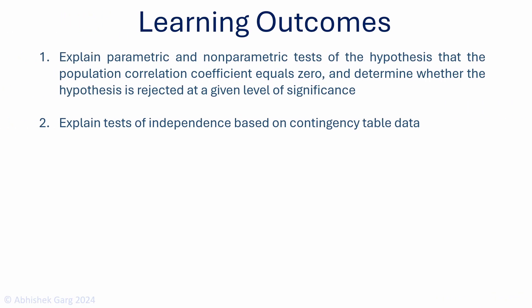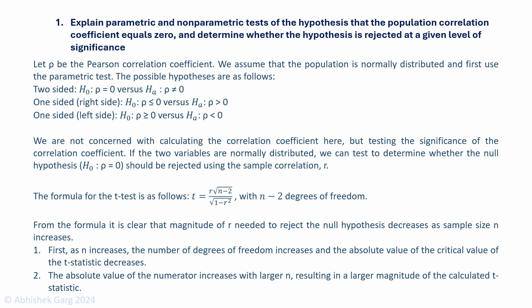There are two learning outcome statements in this module. We'll cover them one by one. Explain Parametric and Non-Parametric Tests of Hypothesis that the Population Correlation Coefficient equals zero and determine whether the hypothesis is rejected at a given level of significance.